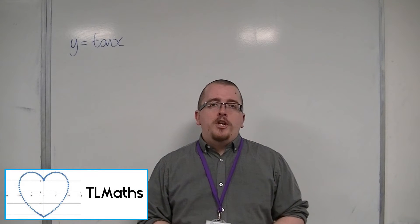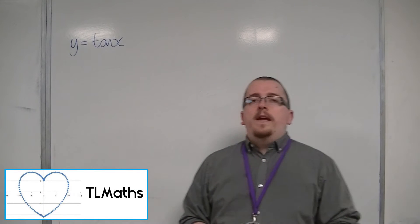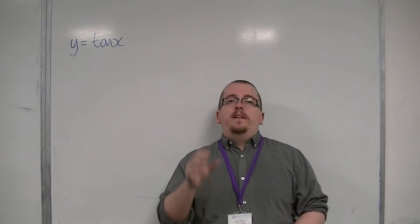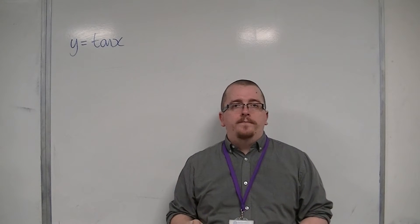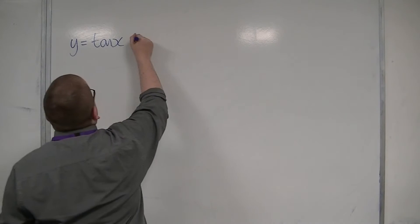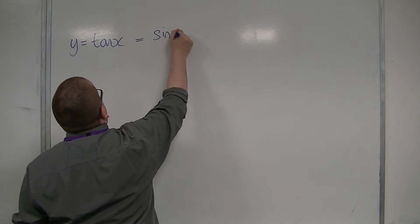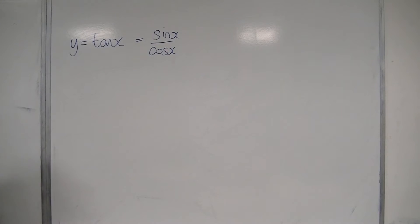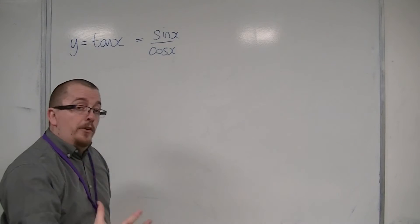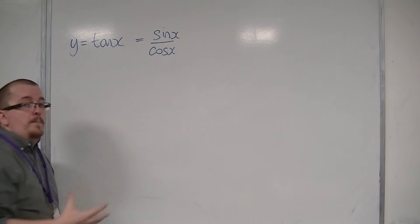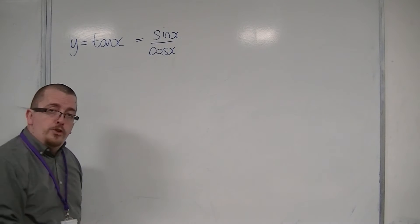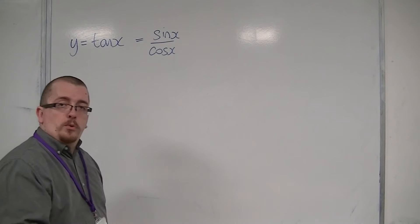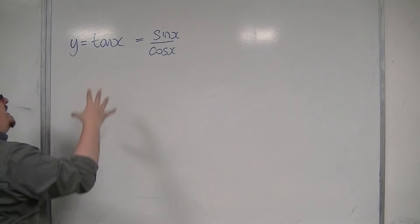If I want to differentiate tan x, then what I must remember is that tan of x is sine over cosine. So tan is sin x over cos of x. Because you have one function divided by another, this is a quotient of functions, and so I can use the quotient rule in order to differentiate tan.